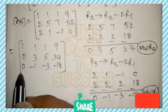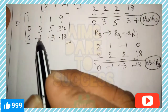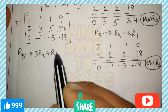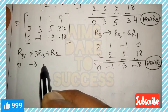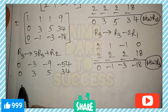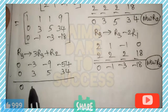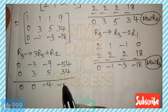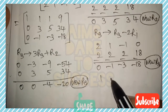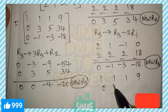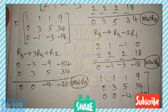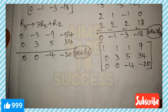Next, make the second column's third element zero. Apply 3R3 + R2: 3 times R3 gives [0, -3, -9, -54], and R2 is [0, 3, 5, 34]. Adding: 0+0=0, 3-3=0, 5-9=-4, 34-54=-20. New R3 is [0, 0, -4, -20]. Copy R1 and R2 as is: [1,1,1,9] and [0,3,5,34].